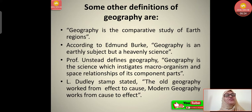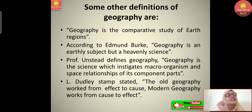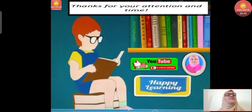L. Dudley Stamp stated that old world geography worked from effect to cause, while modern geography works from cause to effect — vice versa. That means earlier, the effect of a particular issue was studied and then the cause was found. But now, we first look at the cause and then find the effects.